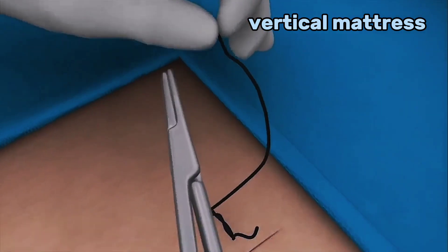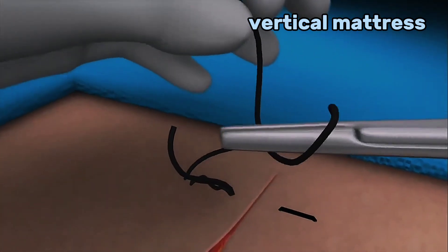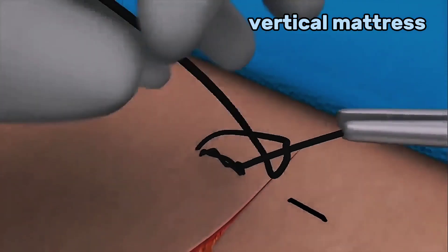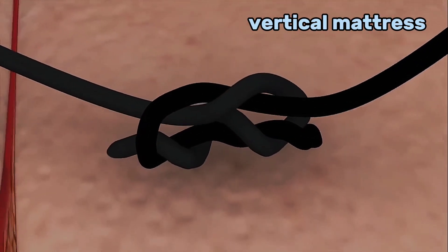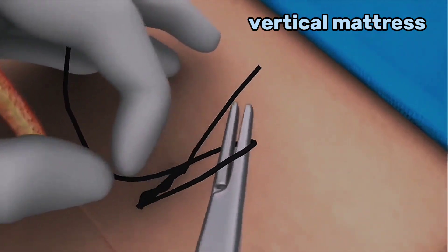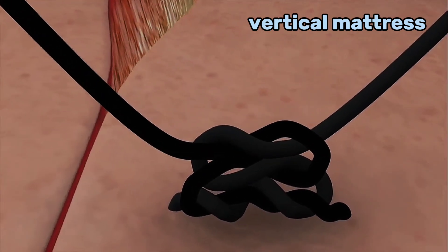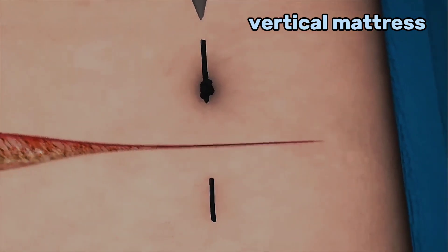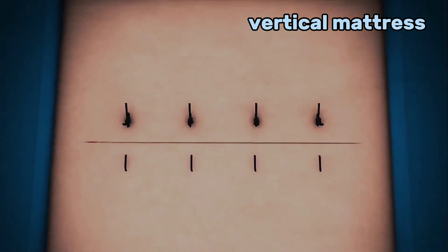This is then followed by a single backwards throw around the needle holder and again the end of the suture is pulled through the loop as it slips off the needle holder. Add a single forward throw in the same way to complete the squared knot. Trim the ends and continue with equally spaced vertical mattress sutures until the wound is closed.